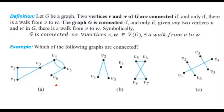The graph in part B is disconnected. If you pick V₄ and any other vertex like V₂, there is no walk from V₄ to V₂, because vertex V₄ is isolated and there is no edge incident on V₄. So you cannot create a walk starting at V₄ and ending at any other vertex. A graph that is not connected is called disconnected.